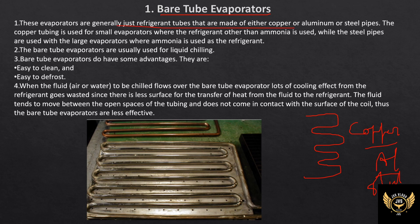We use these materials to absorb heat. We use ammonia as a refrigerant, but ammonia can cause corrosion. There is a chance of leakage. For ammonia refrigerants, you can use a steel pipe.